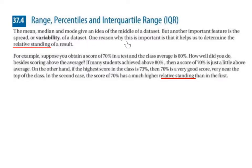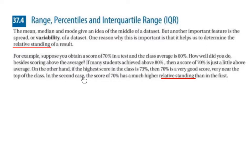One reason why spread is important is that it helps us determine the relative standing of a result. For example, suppose you obtain a score of 70% in a test and the class average is 60%. If many students achieved above 80%, then 70% is just a little above average. On the other hand, if the highest score in the class is 73%, then 70% is a very good score — very near the top of the class. In the second case, the score of 70% has a much higher relative standing than in the first.